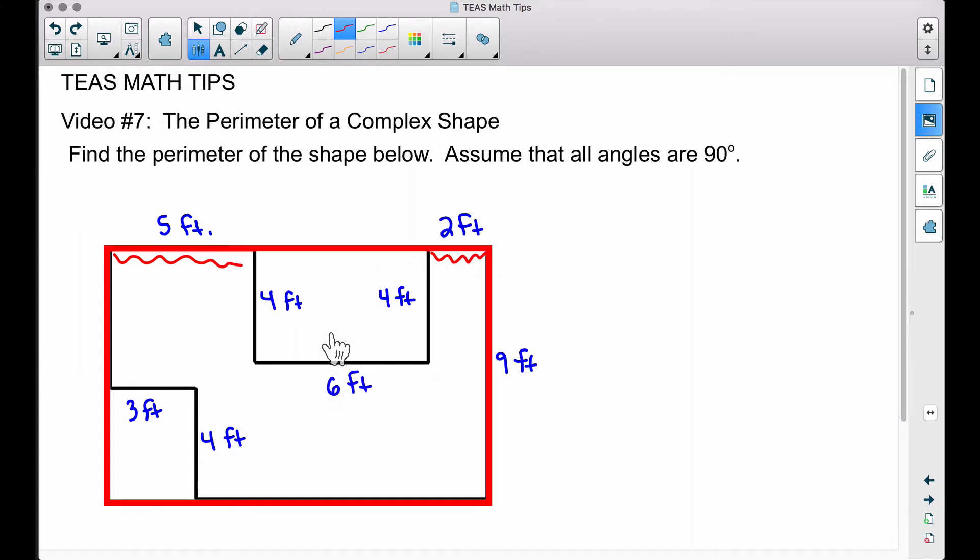But then we have this measurement of 6, so we have 6 more right here as well. So we need to think about that. To find the length of this entire top piece, this entire top piece here is 5 plus 6 plus 2. Therefore our length up top is 13 feet. That's the distance from here straight across to here. Well, if we think about that down here, now this entire piece from here to here must also be 13 feet.